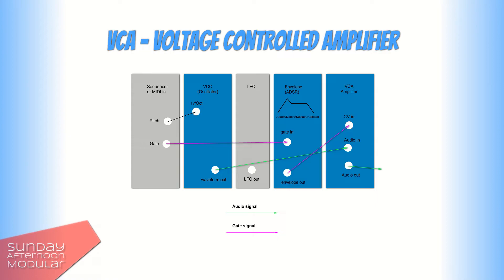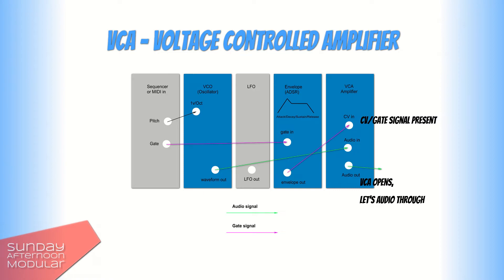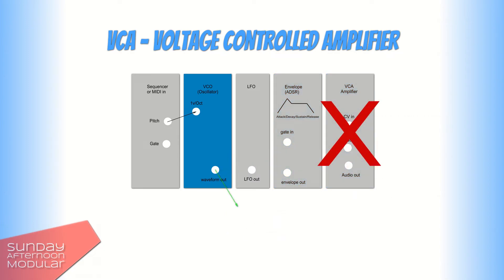Now, depending on the envelope signal, it will be a rather short or long tone and will abruptly or slowly fade out. So without the VCA, we would just hear a constant tone coming from the VCO.